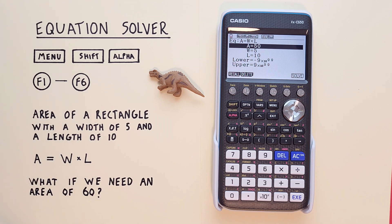Okay, let's say we wanted to use the same equation. But we wanted to find an area of 60. Well, for that, we would change A to 60.